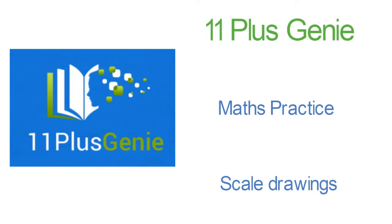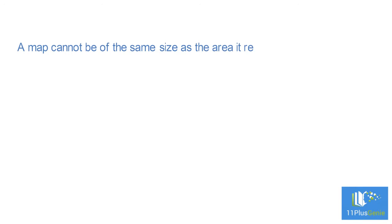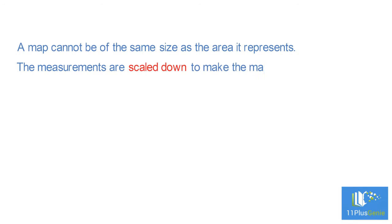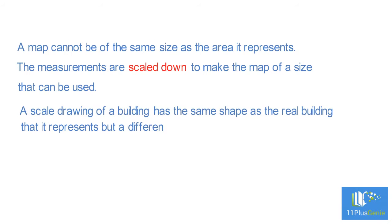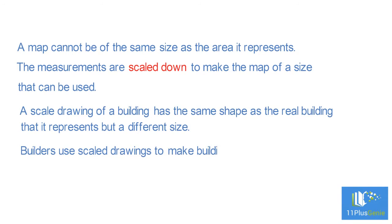Scale drawings: a map cannot be the same size as the area it represents, so measurements are scaled down to make the map a usable size. A scale drawing of a building has the same shape as the real building it represents, but a different size. Builders use scale drawings to make buildings and bridges.